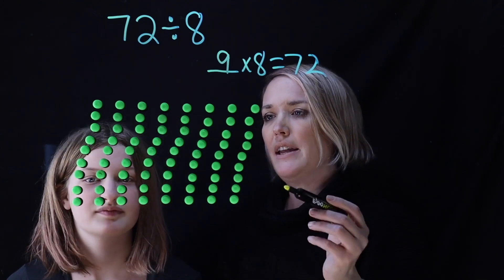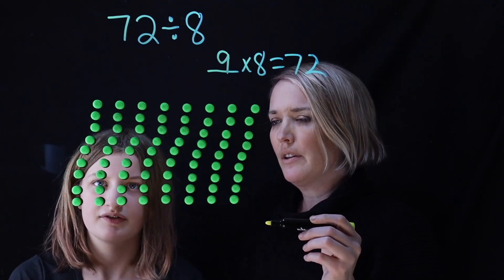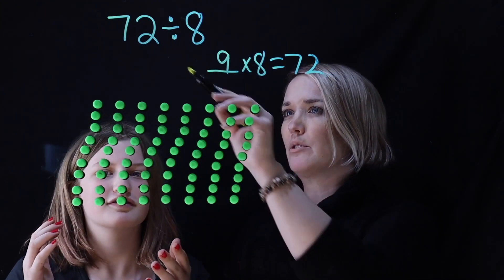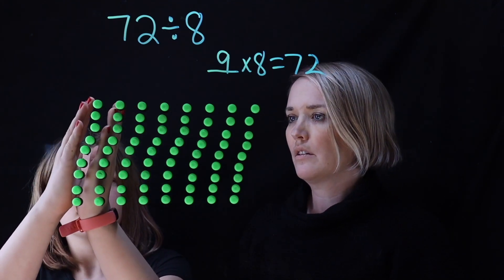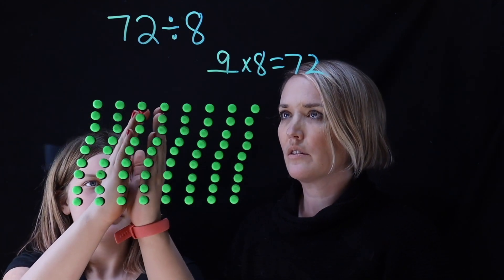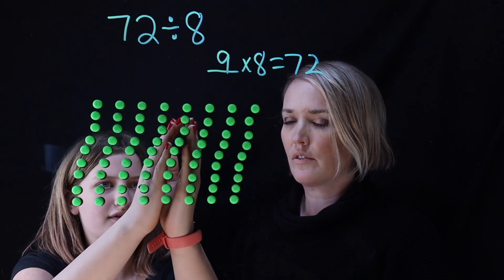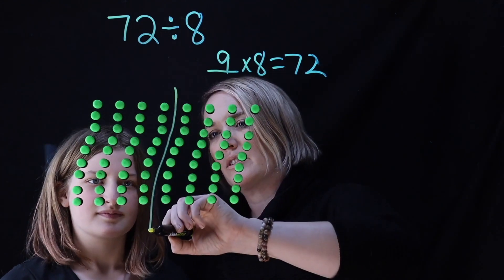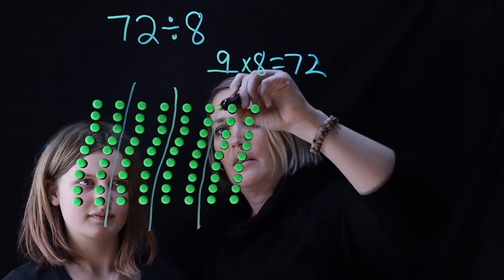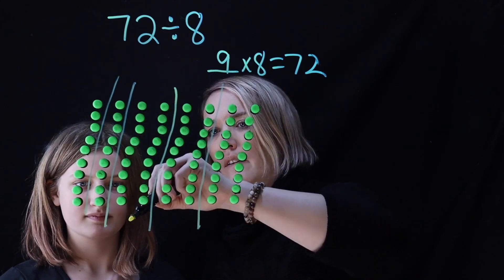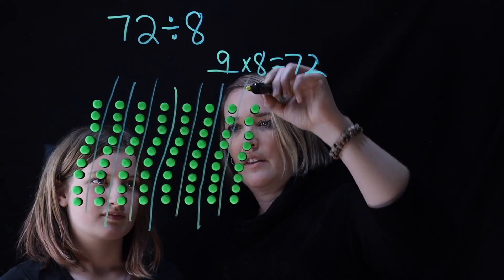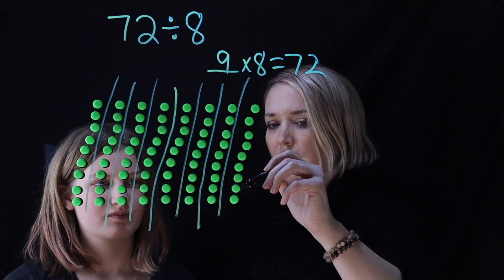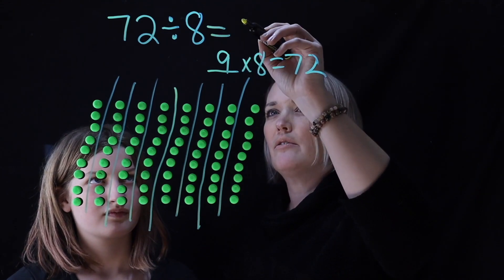Now, if I wanted to see the 8 equal groups, can you show me where they are? 1 equal group, 2 equal groups, 3 equal groups, 4 equal groups, 5 equal groups, 6 equal groups, 7 equal groups, and 8 equal groups. I'll draw the lines so people can see them. And there we go — we have the 8 equal groups and 9 is in each one: 1, 2, 3, 4, 5, 6, 7, 8, 9. So 72 divided by 8 equals 9.